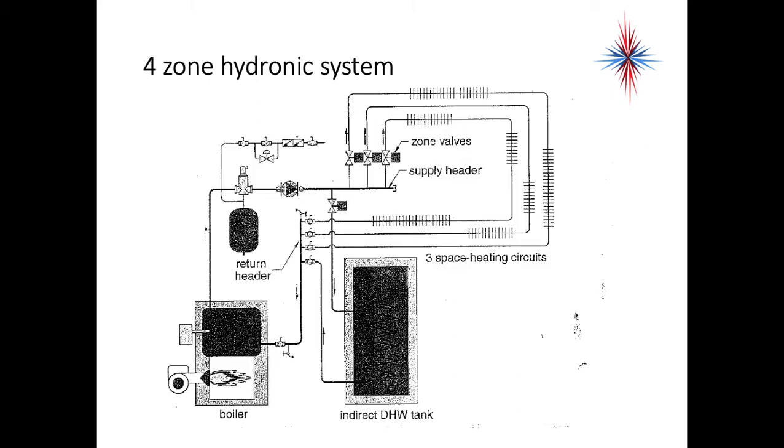This is just another line drawing example of a hydronic system. This is an oil-fired boiler and has three separate zones. These zones are what we call series circuit. You have more than one heat emitter, which is the lines here, in one circuit. So, you have three parallel series circuits, just like you would see with electrical devices.